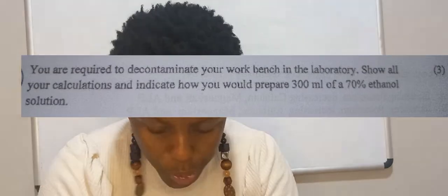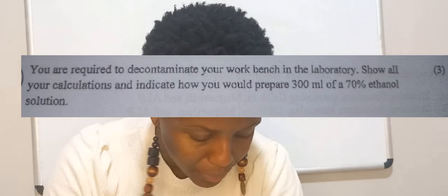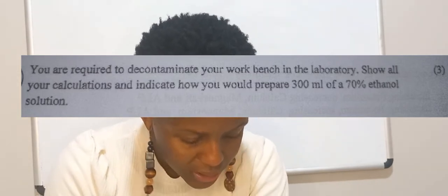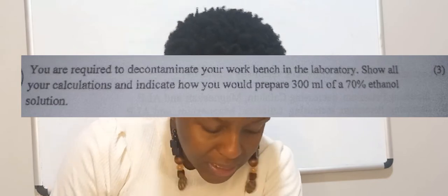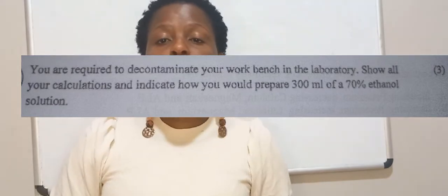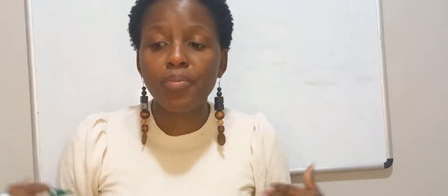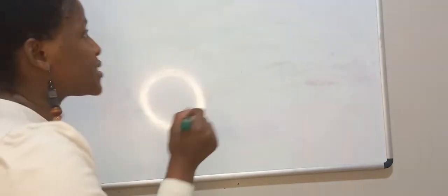The next question says: you are required to decontaminate your workbench in the laboratory — show all calculations and indicate how you will prepare 300 ml of a 70% ethanol solution. We use ethanol to decontaminate our benches, but when we buy it, it's a concentrated liquid. You need to make a 70% concentration because you can't use 100%. The final volume to prepare is 300 ml.